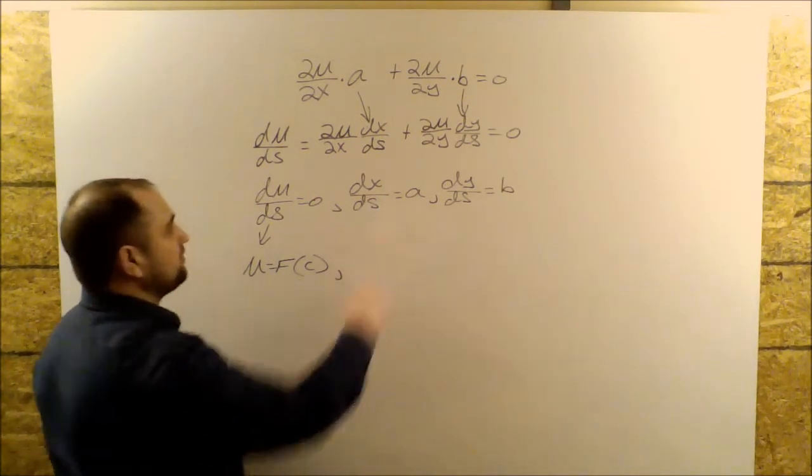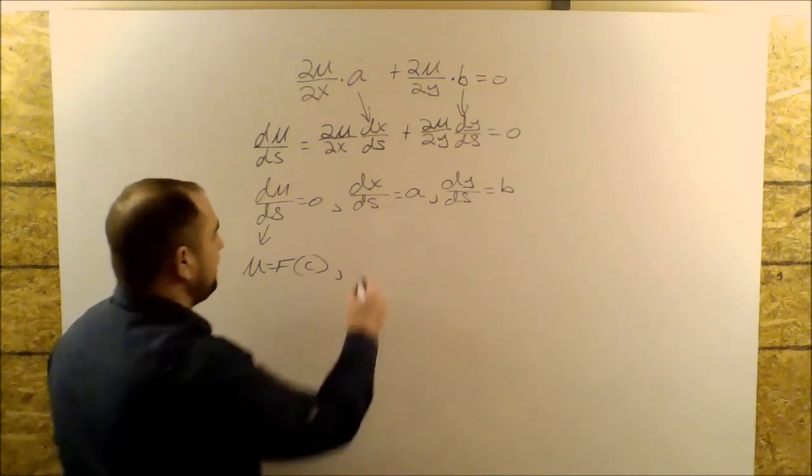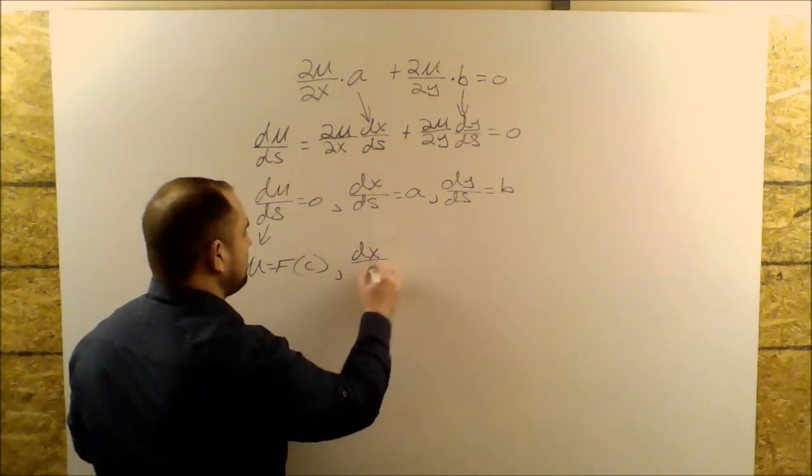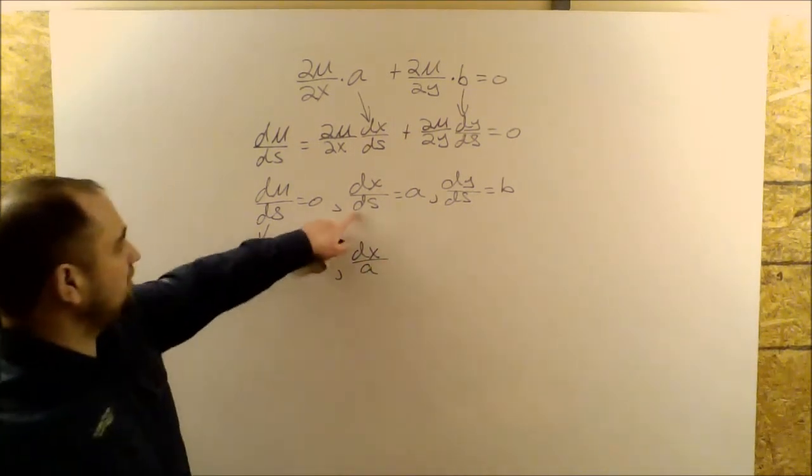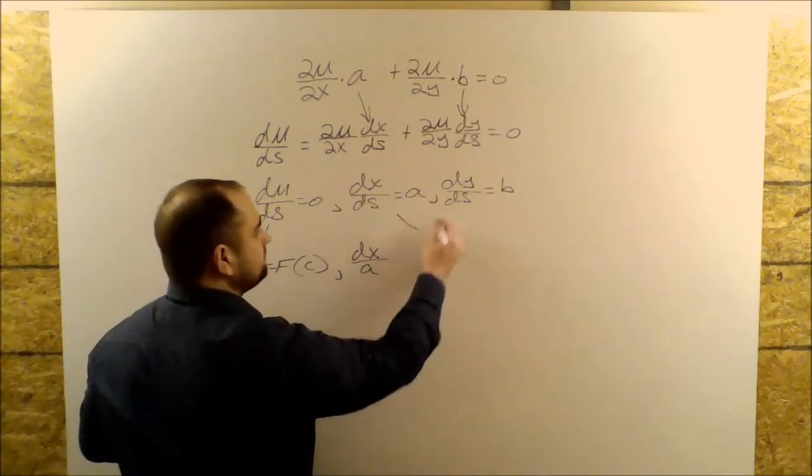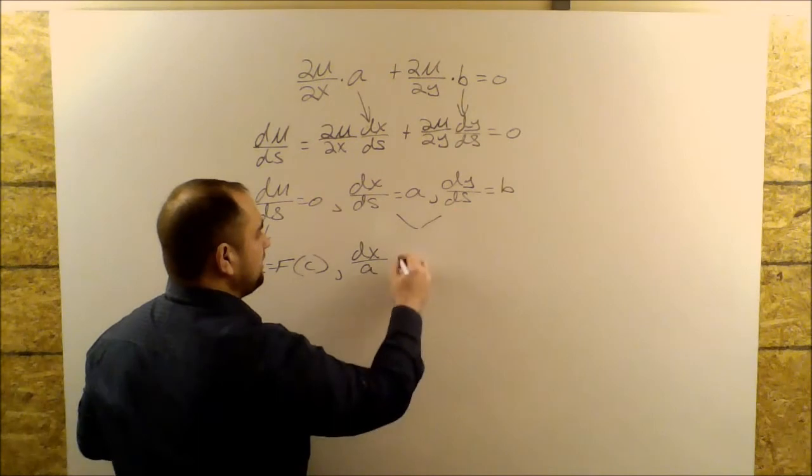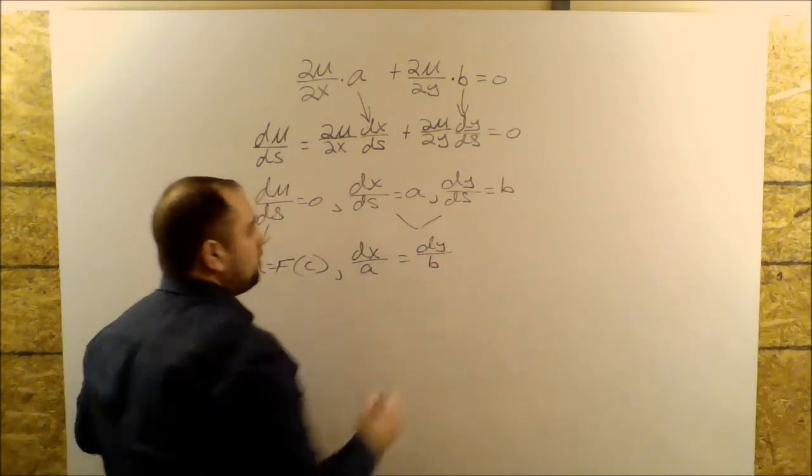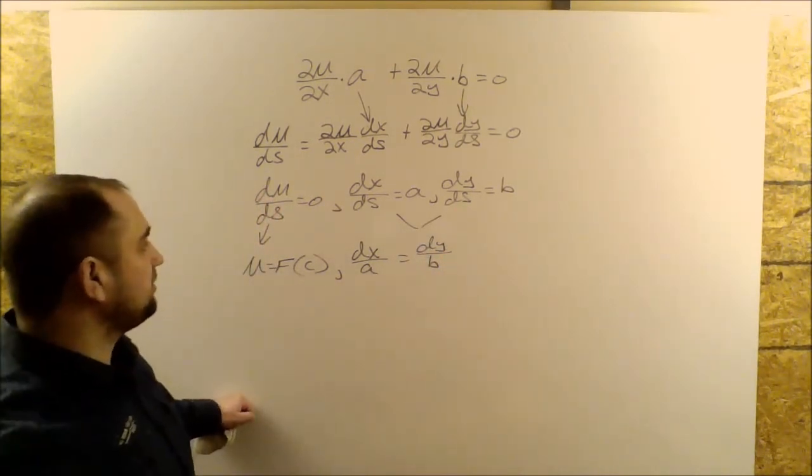All right, so if I solve this one for dS, I get dX over A is equal to dS. And then this one here, I get dY over B is equal to dS. So they're equal.